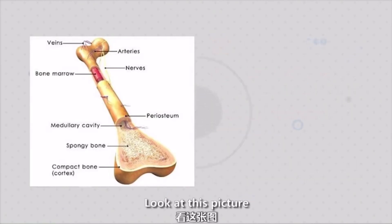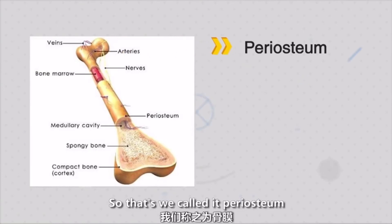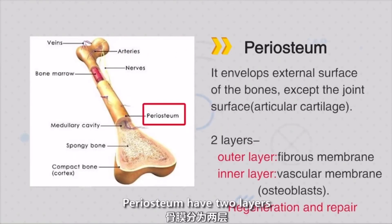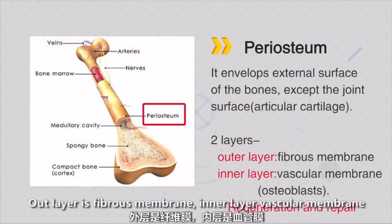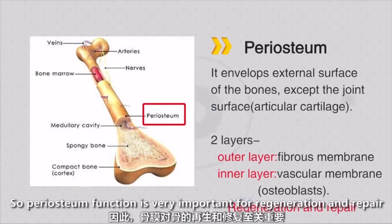Number two, look at this picture. The bone on our body is covered by fibrous tissue — that's what we call the periosteum. The periosteum has two layers. The outer layer is the fibrous layer. The inner layer is the vascular membrane, which supports the blood flow and nerves of the bone. The function of the periosteum is very important: it is for bone regeneration and repair.